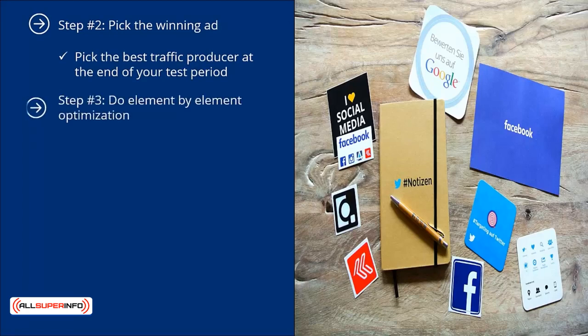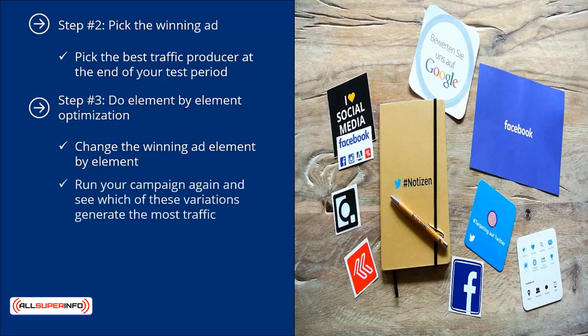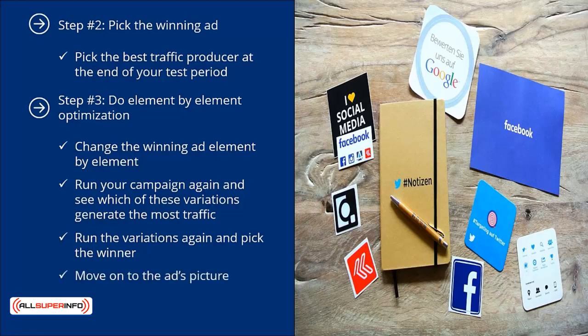Step number three: do element-by-element optimization. Change the winning ad element by element — start with the headline. Make five different versions of the ad, each with different headlines, run your campaign again, and see which variations generate the most traffic. Deactivate the rest, then take the winning headline and see if you can tweak it to increase the conversion rate. Run the variations again and pick the winner. Keep repeating this until you cannot improve the click-through and conversion rate of the ad, then move on to the ad's picture — run the same ad with five different pictures and repeat this process.